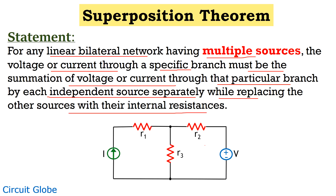Consider the network shown here, having a current source, a voltage source, and three resistances R1, R2, and R3. Suppose we have to determine the drop across resistance R3. Since there are two active sources, we have to individually calculate the drop across R3 by considering each source separately at one time.